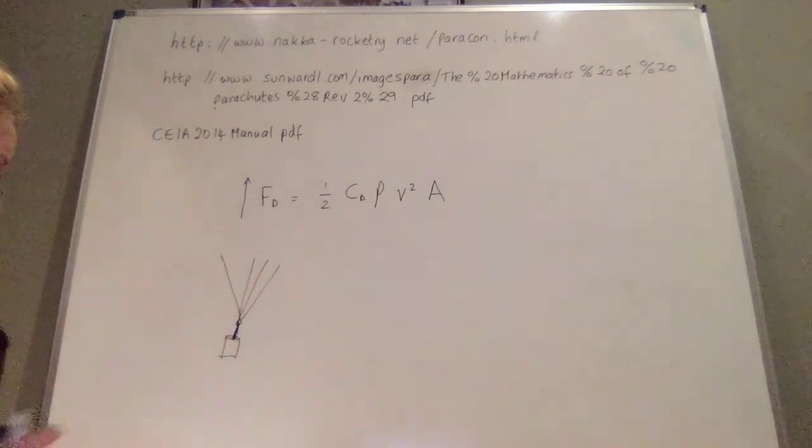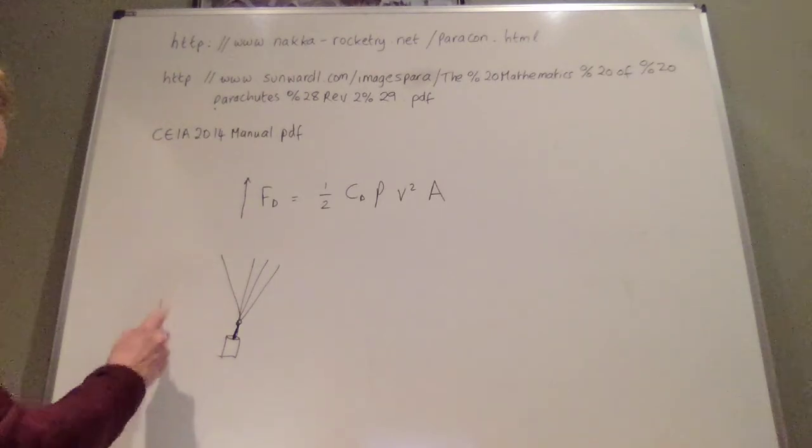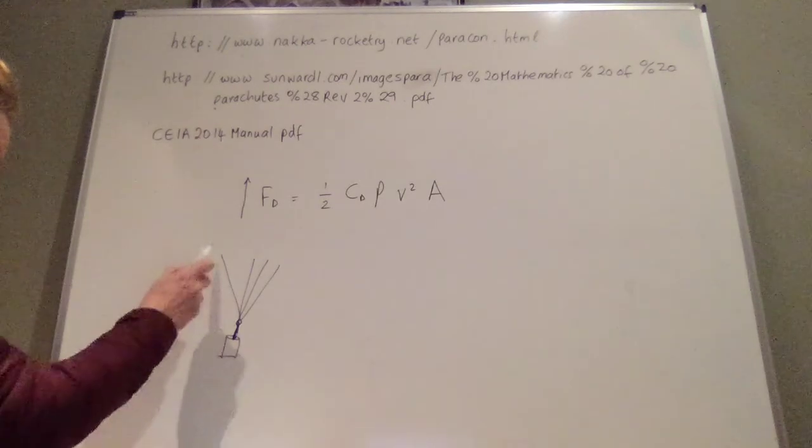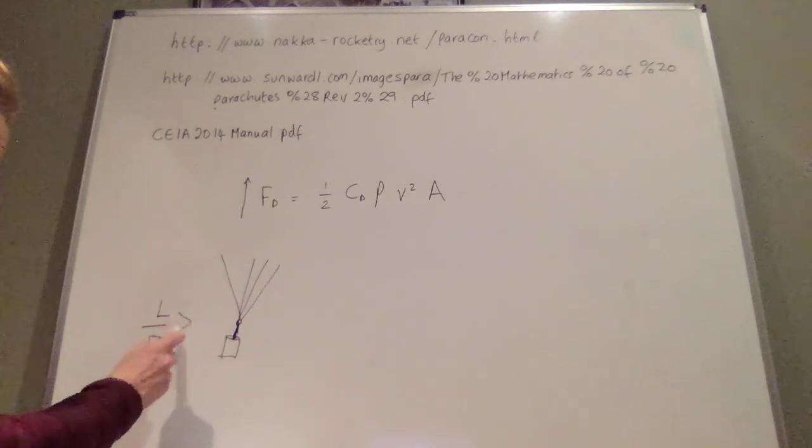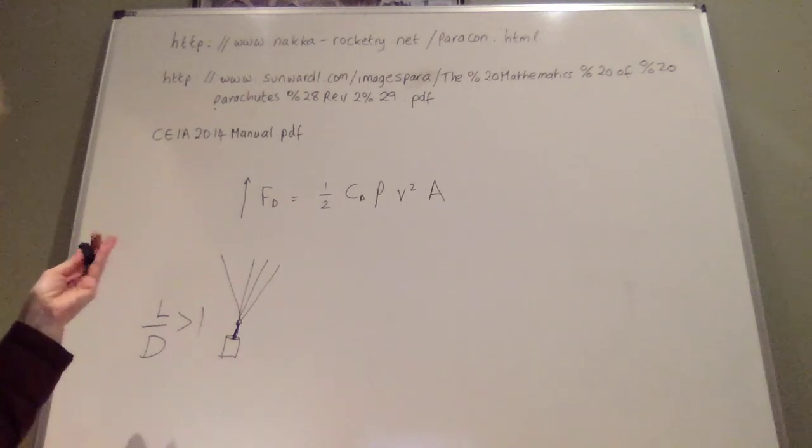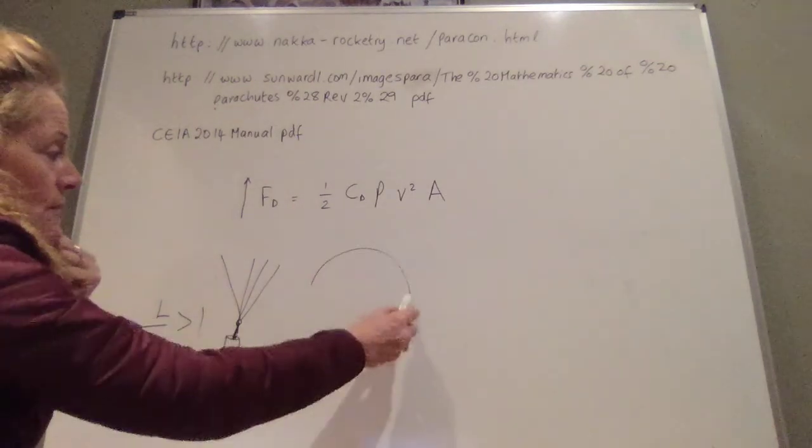Obviously, the length of the shroud lines is also important. And there's basically the advice is to keep the length divided by the diameter of the canopy. So the length of the shroud line divided by the diameter should be greater than one, if possible. As I said, the stitching.